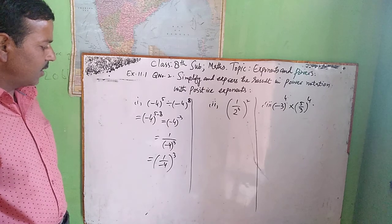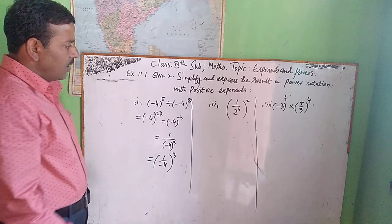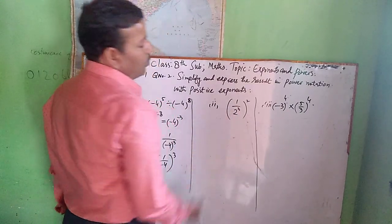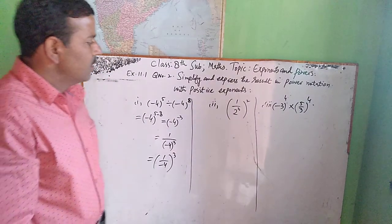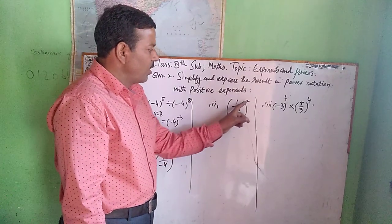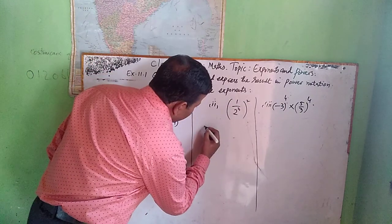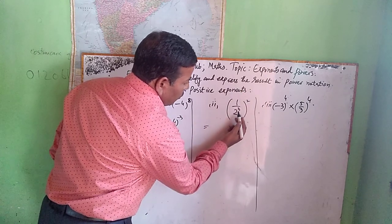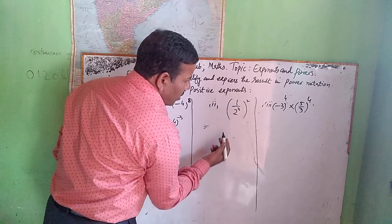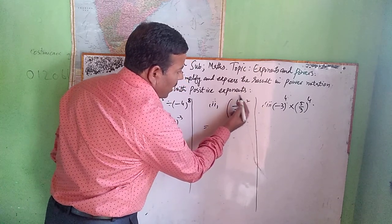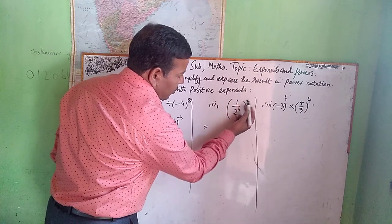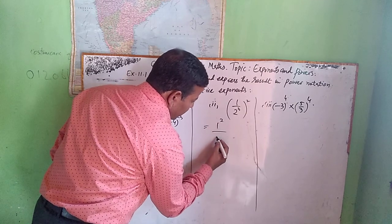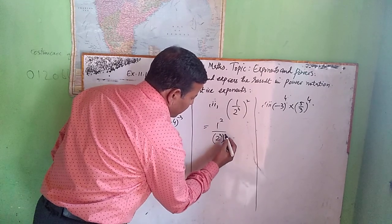Now part 2: 1 upon 2 cube, whole raised to power 2. Simply, 1 is having power 2 and 2 cube is also having power 2. So we raise the whole fraction — 1 by 2 cube — to the power 2.